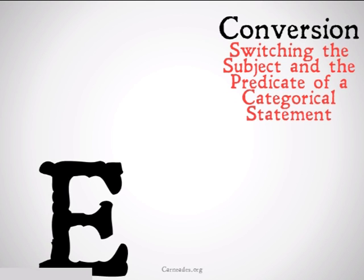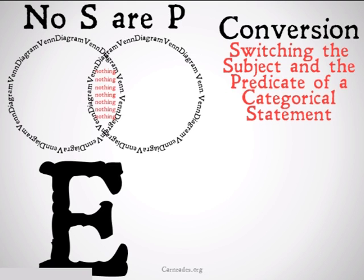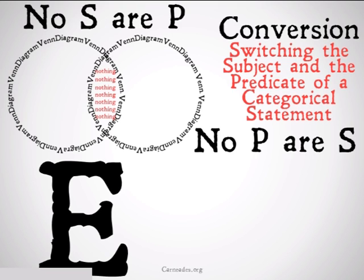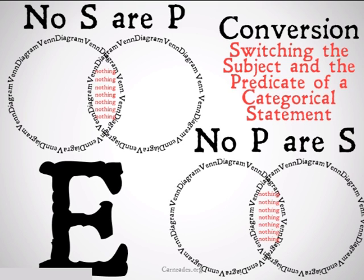We said we can do conversion on E statements. Let's take a look. No S is P. We fill in our Venn diagram and shade in the middle, because nothing can be there. If we switch the subject and predicate, we get No P is S. We end up with the exact same Venn diagram, once again shading the middle. So we're allowed to do conversion on an E statement.